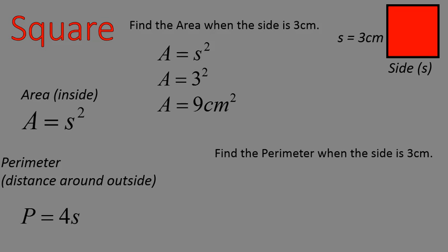Perimeter of the same square is four times, again, the measurement of the side. So perimeter is the distance around the outside, so three, six, nine, and twelve, four sides that are all three centimeters. You're just multiplying four times the measurement of the side, so that'll give you 12 centimeters.